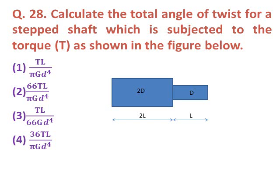Question twenty-eight: Calculate the total angle of twist for a step shaft subjected to a torque as shown in the figure. Option one: TL/(π G D⁴). Option two: 66TL/(π G D⁴). Option three: TL/(66 G D⁴). Option four: 36TL/(π G D⁴).